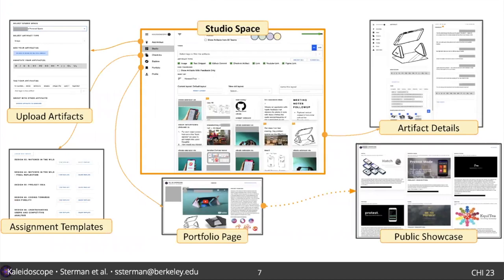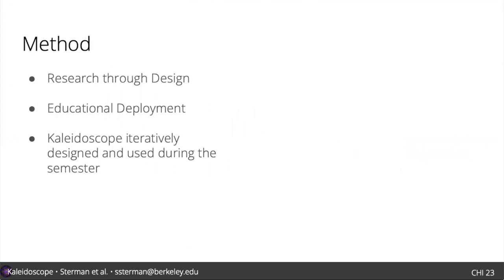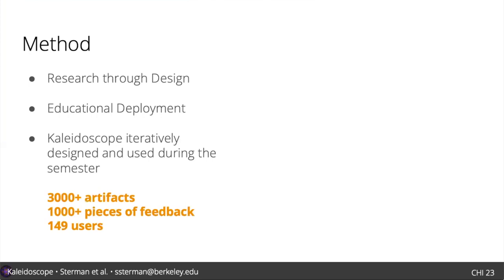The system we designed is Kaleidoscope, a collaborative tool that collects multimedia artifacts from all stages of the design process into team studio spaces, and supports creating and submitting assignments, sharing feedback and critique, creating public portfolios, and facilitating group coordination. We developed Kaleidoscope as a research through design artifact, and iteratively developed it during the fall semester of 2020, in live use in an undergraduate interaction design course.